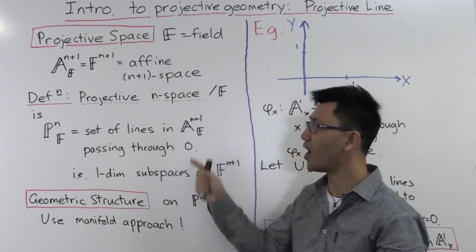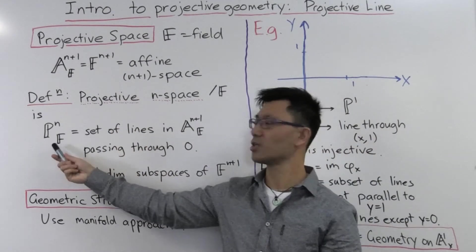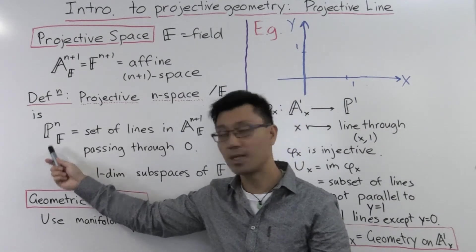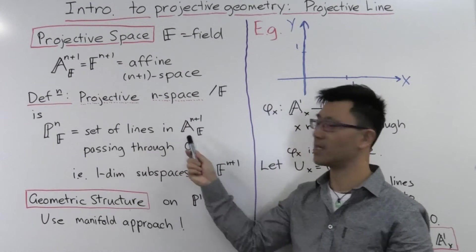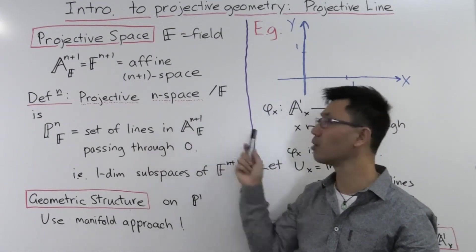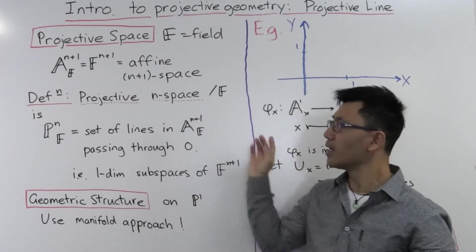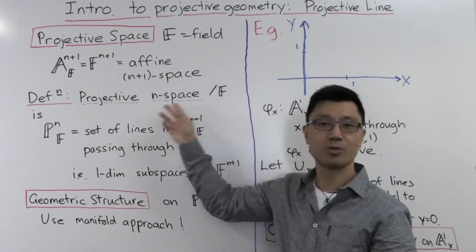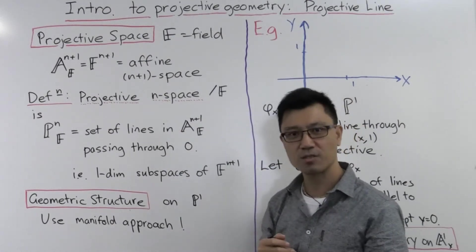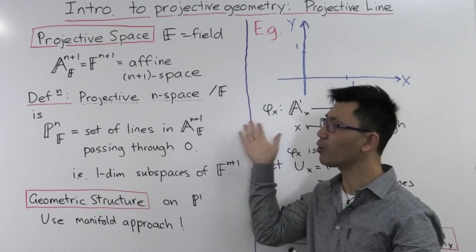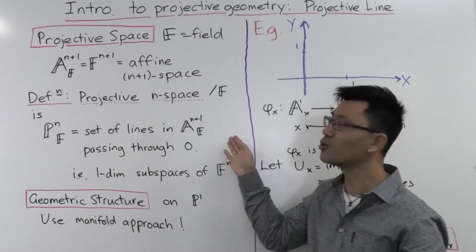At least it's easy to define as a set. So this projective n-space, denoted P^n(F), is just the set of all lines inside affine n+1 space which pass through the point zero. Technically, this definition of projective n-space is the differential geometer's version, as opposed to the algebraic geometer's version, but they're equivalent, and this is the one you usually first see.